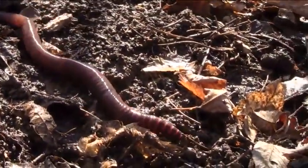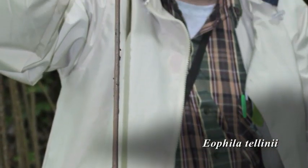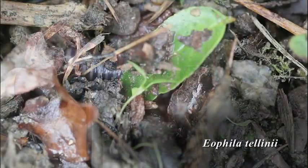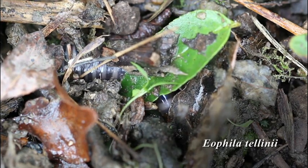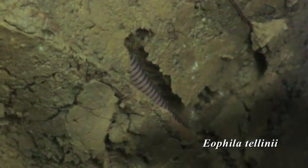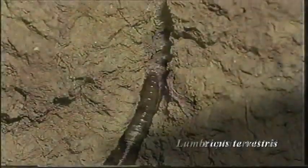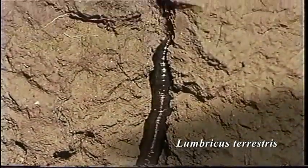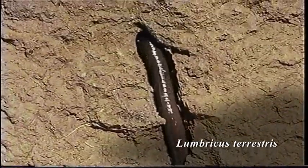The species of worms can be divided into five ecological categories. The deep burrowers are often very large, like Eophila tellini, which produces predominantly vertical tunnels in the soil. Lumbricus terrestris, the species that Darwin studied, also digs deep tunnels that are predominantly vertical in the soil.